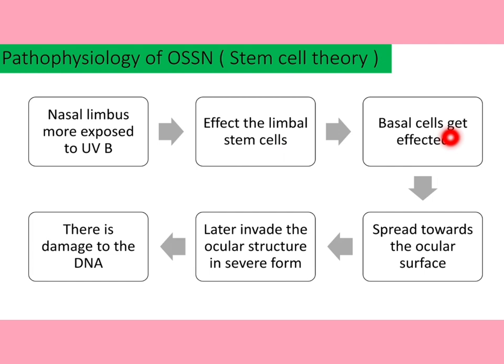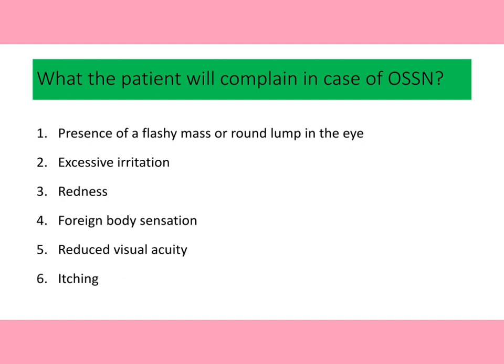UVB exposure affects the limbal stem cells, causing the basal cells to become mutant and carcinomatous. These cells then spread toward the ocular surface and, in severe untreated cases, can invade ocular structures with associated DNA damage. This is the pathophysiology of OSSN based on the stem cell theory.